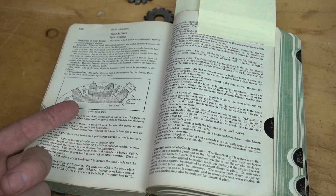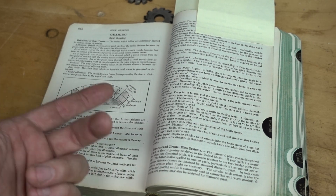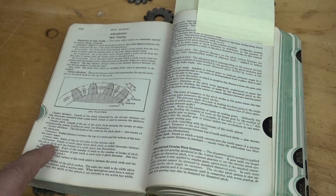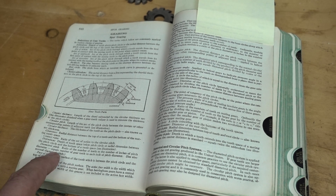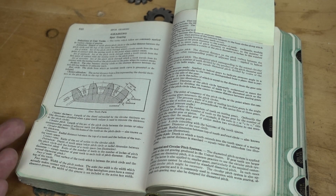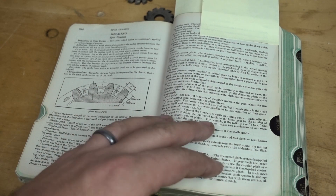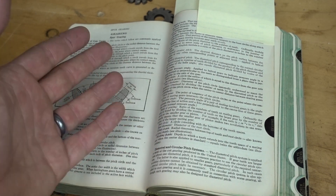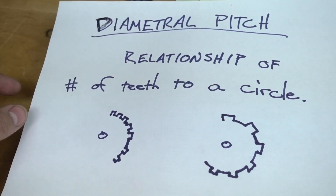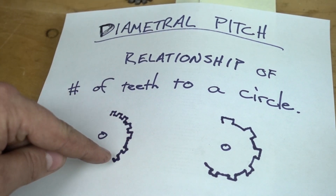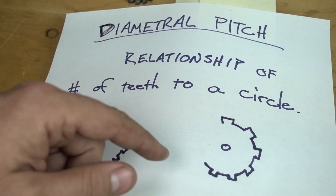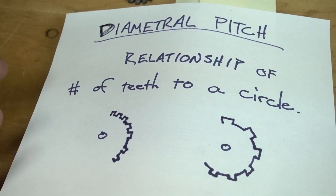We need to know a term called diametral pitch. Diametral pitch — the way I understand it — I could sit here and read the definition to you, but I could just say go buy this book and read it. The diametral pitch is basically the relationship of the number of teeth to a circle. The number of teeth to a circle — it's just a relationship. Technically it's a ratio, but I'm just calling it a relationship because the word ratio kind of scares me.